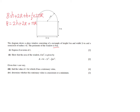We need to express h in terms of r, so we rearrange: 8 − 2r − πr, then divide everything by 2. So h = 4 − r − (πr/2). That is h isolated in terms of r.